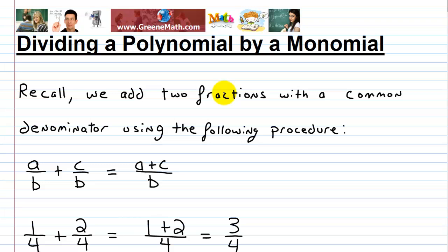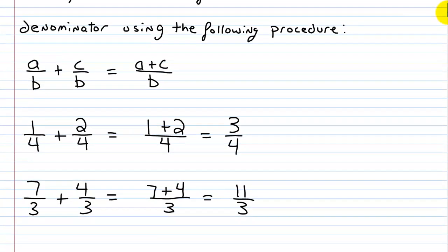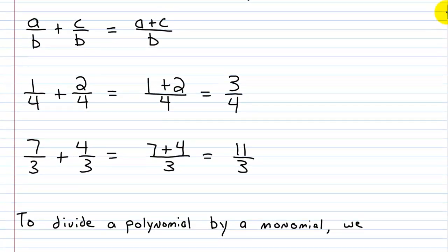We want to learn how to divide a polynomial by a monomial. To start, let's recall something from fractions: when we add two fractions with a common denominator, we have a/b + c/b = (a+c)/b. So if we already have a common denominator, it equals the sum of the numerators over that common denominator.